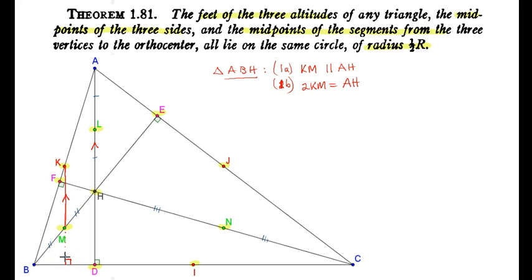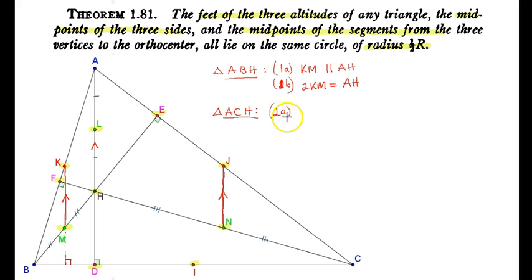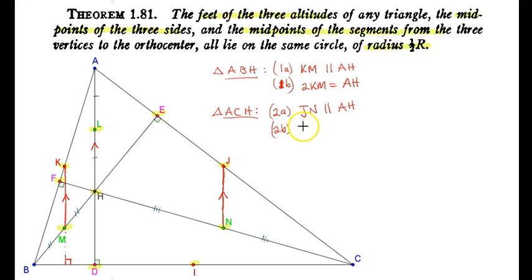Now consider triangle ACH. Similarly, J is the midpoint of AC and N is the midpoint of HC. Line segment JN is parallel to AH because JN is the midline of triangle ACH — let's call this result 2A. Like the previous case, JN is also half the size of AH, so 2·JN = AH.